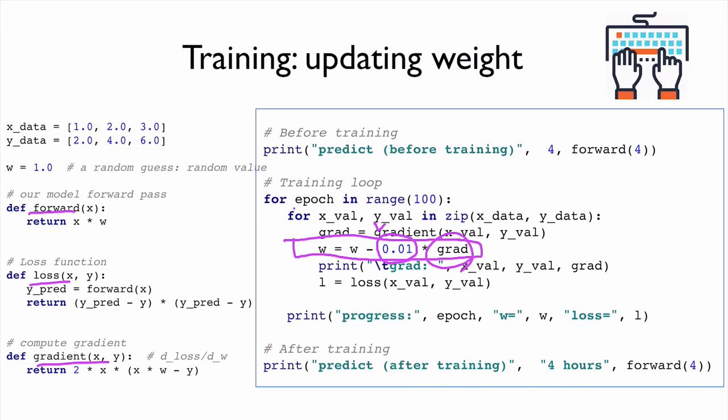So in this epoch, decide how many loops we're gonna go. And then we're gonna get x and y value. And then each time we can compute this gradient. And then we update this W. And then we move on.